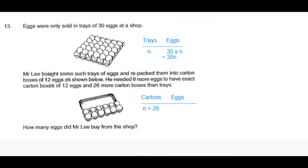And each carton box can hold 12 eggs. So the total number of eggs in all the carton boxes is 12 times the number of carton boxes, which is n plus 26.